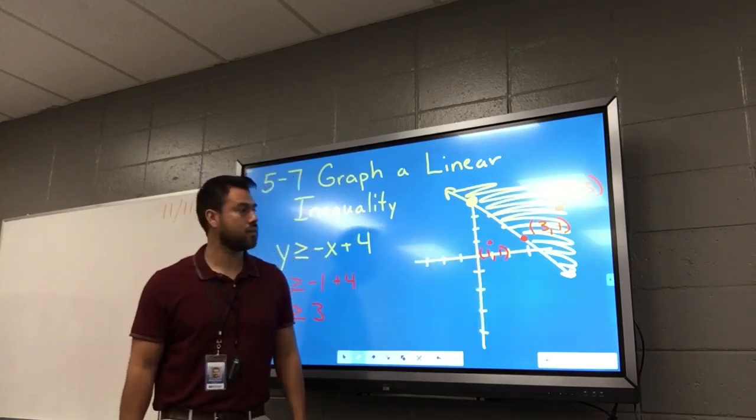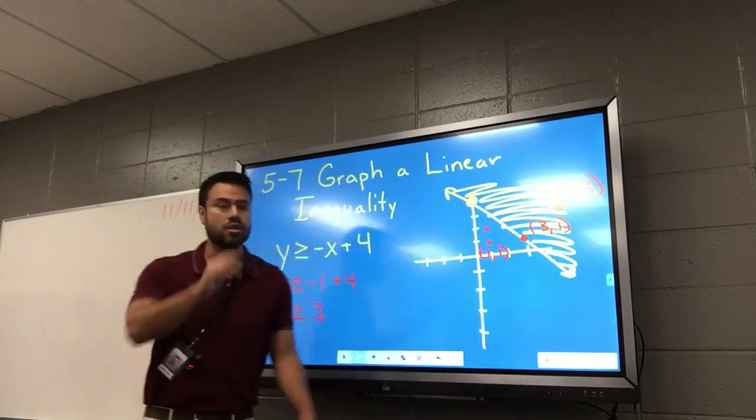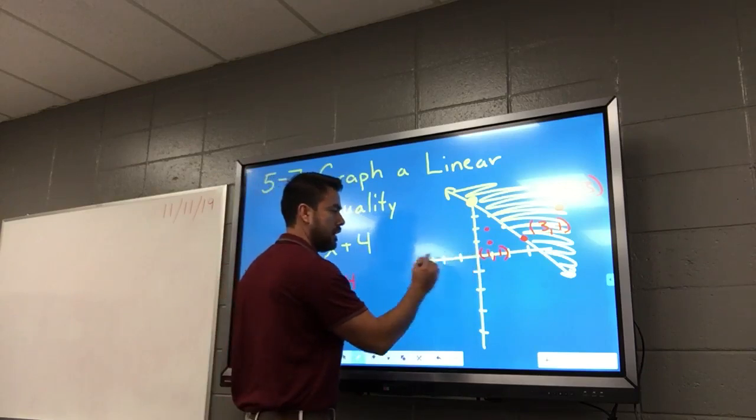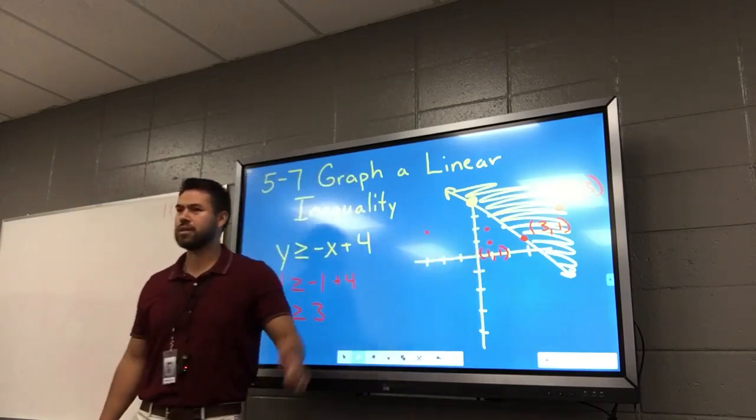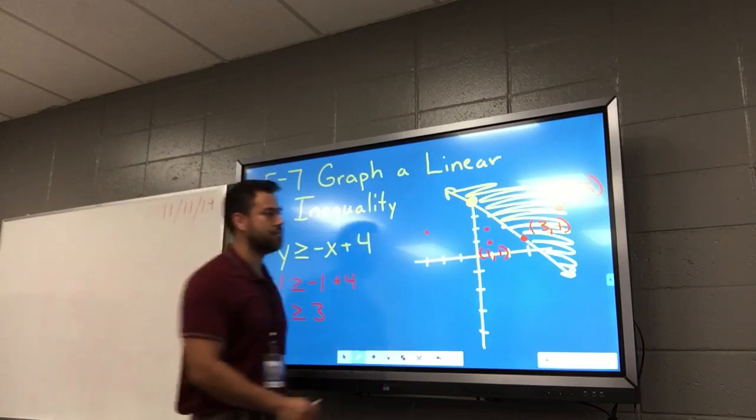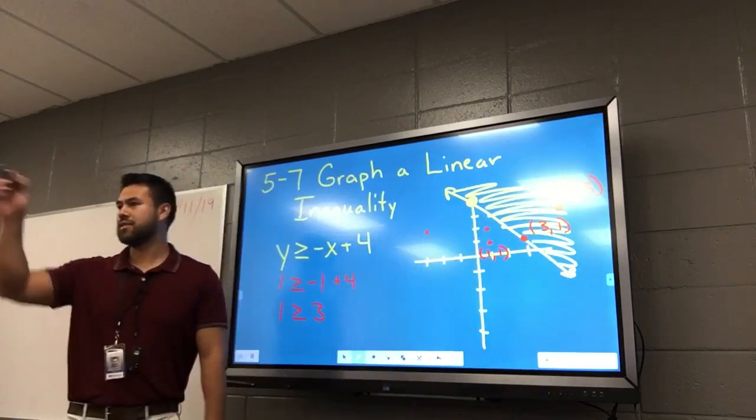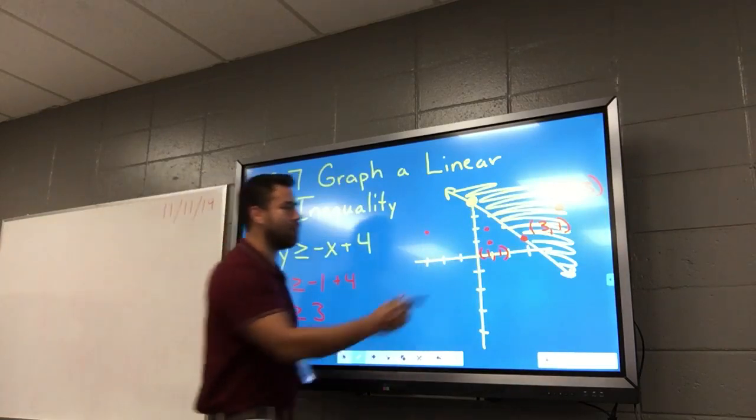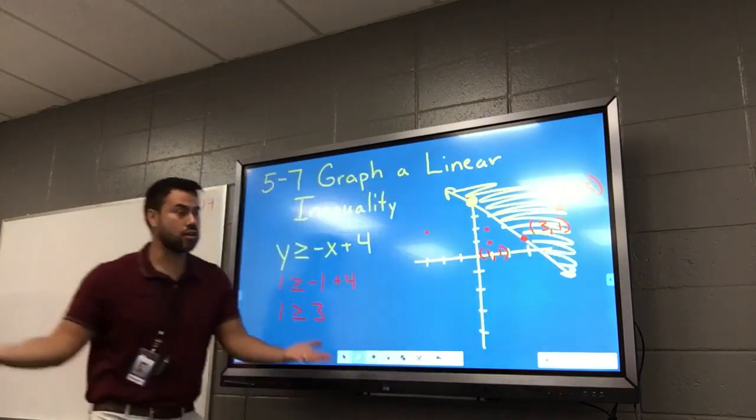Can you guys find another point that will not work? Darius? One, two. One, two would not work. Another one, Justin? Negative three, two. Negative three, two would not work. Give me one that does work that we haven't listed. Drew? Ten, ten. Ten, ten, somewhere up there. Yep, that works. William? Five, four. Five, four, like right here somewhere. Mm-hmm. All right, you guys get that?